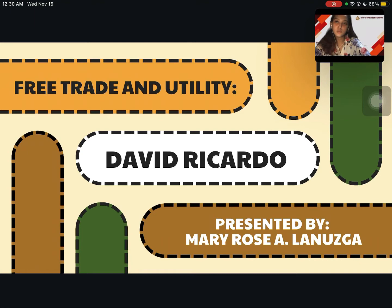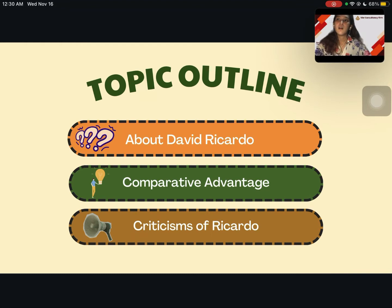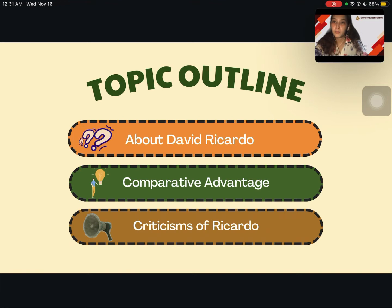Good day, sir. I am Mary Rose Ilanusga and I am here to discuss the free trade and utility by David Ricardo. Here is my topic outline: first, we will get to know who David Ricardo is; second, we will be tackling comparative advantage and give an example of it; and third, we will cover the criticisms of Ricardo.